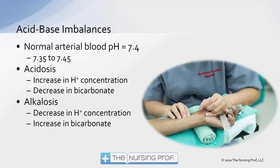We can also do an exchange in the intracellular and extracellular fluids of ions, including potassium and hydrogen ions in and out of the cells. Typically, we find these things with an arterial blood gas. Our normal arterial blood pH is 7.4, so we would expect a blood gas to be somewhere in the range of about 7.35 to 7.45. Acidosis is an increase in hydrogen ion concentration and a decrease in bicarb, whereas alkalosis is a decrease in hydrogen ion concentration and an increase in bicarb.